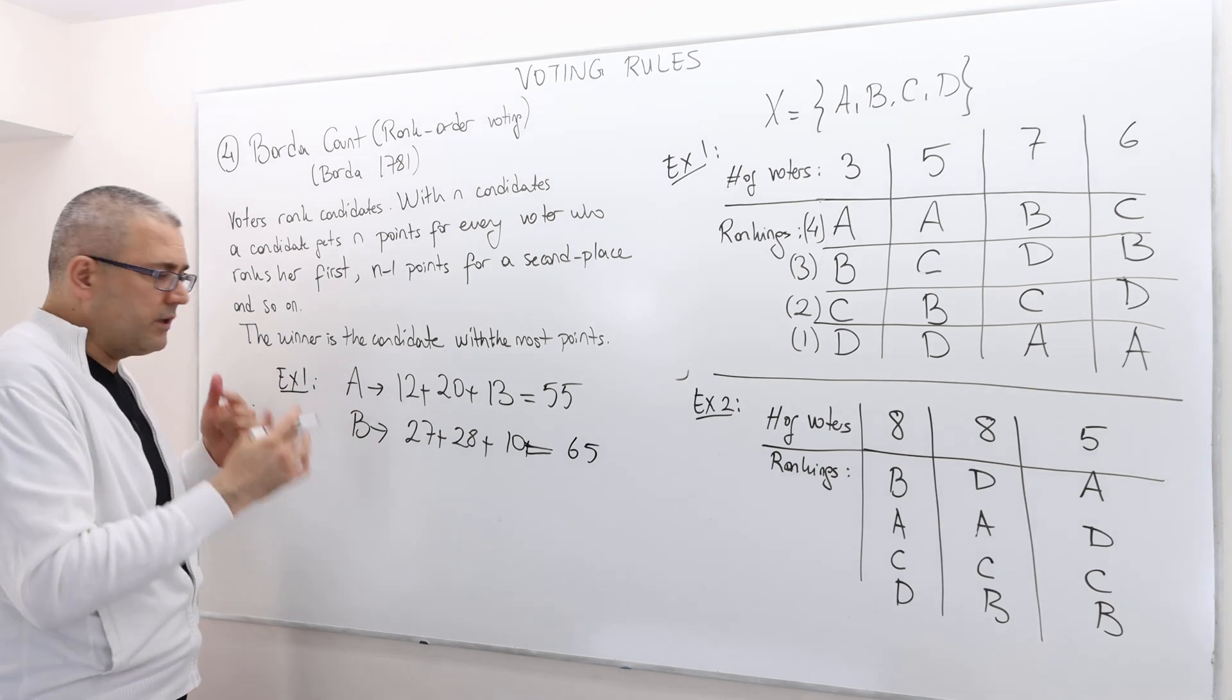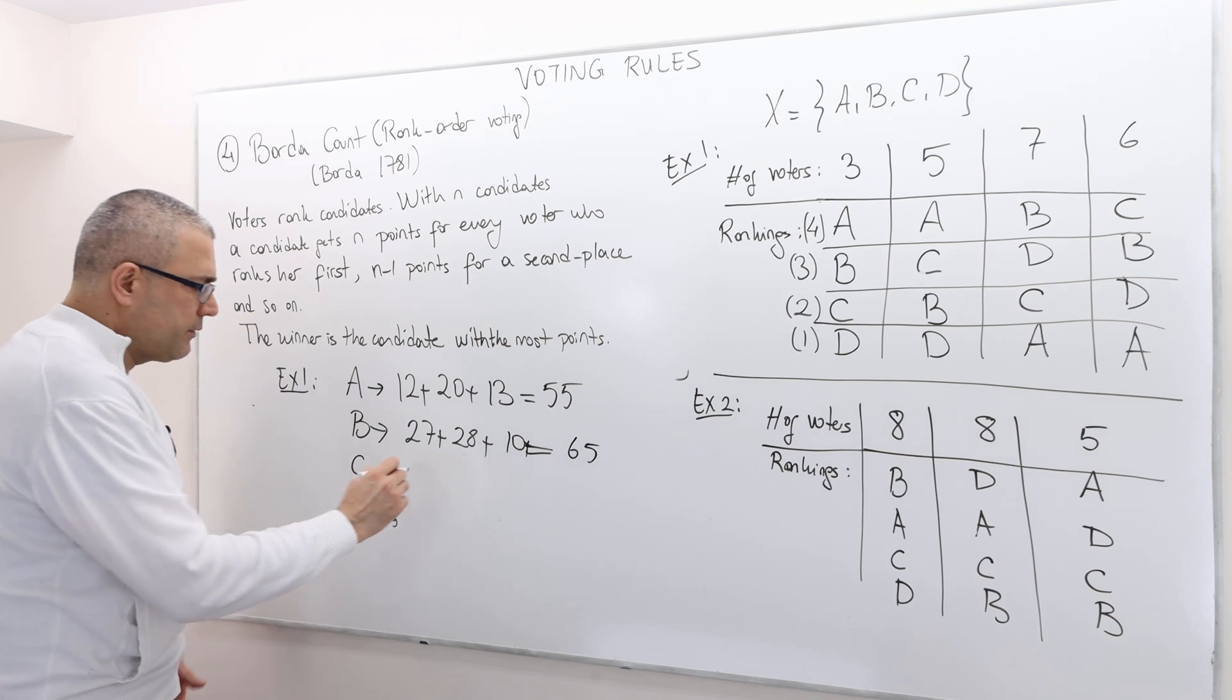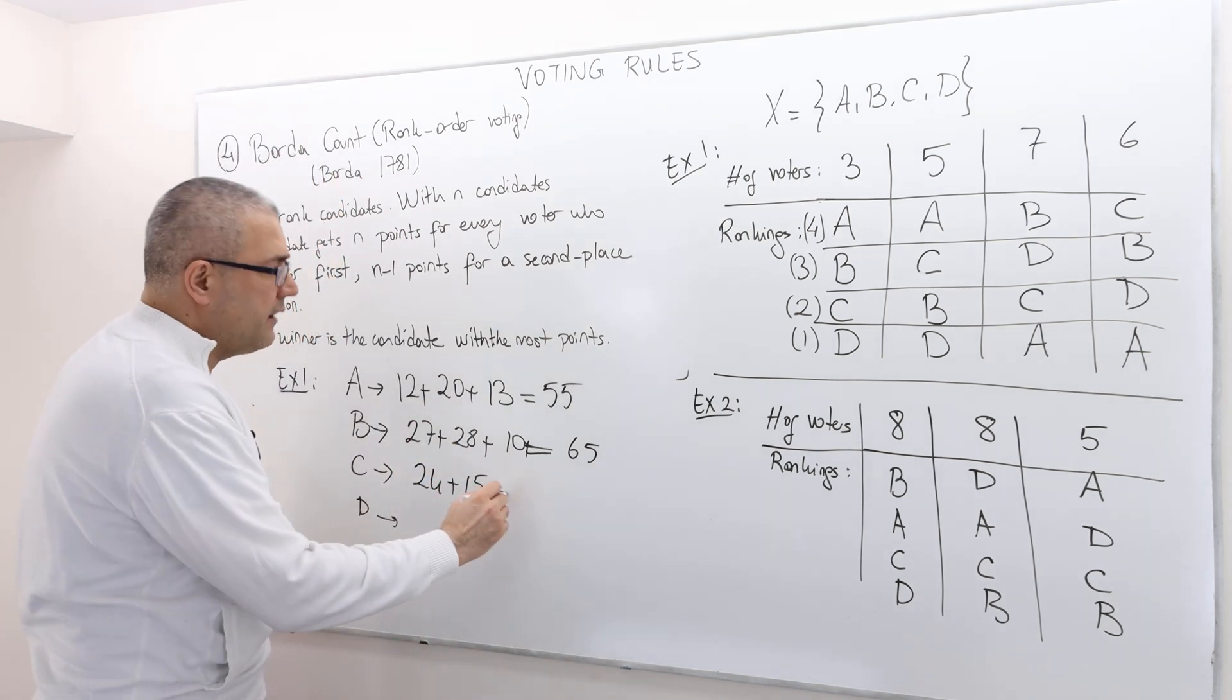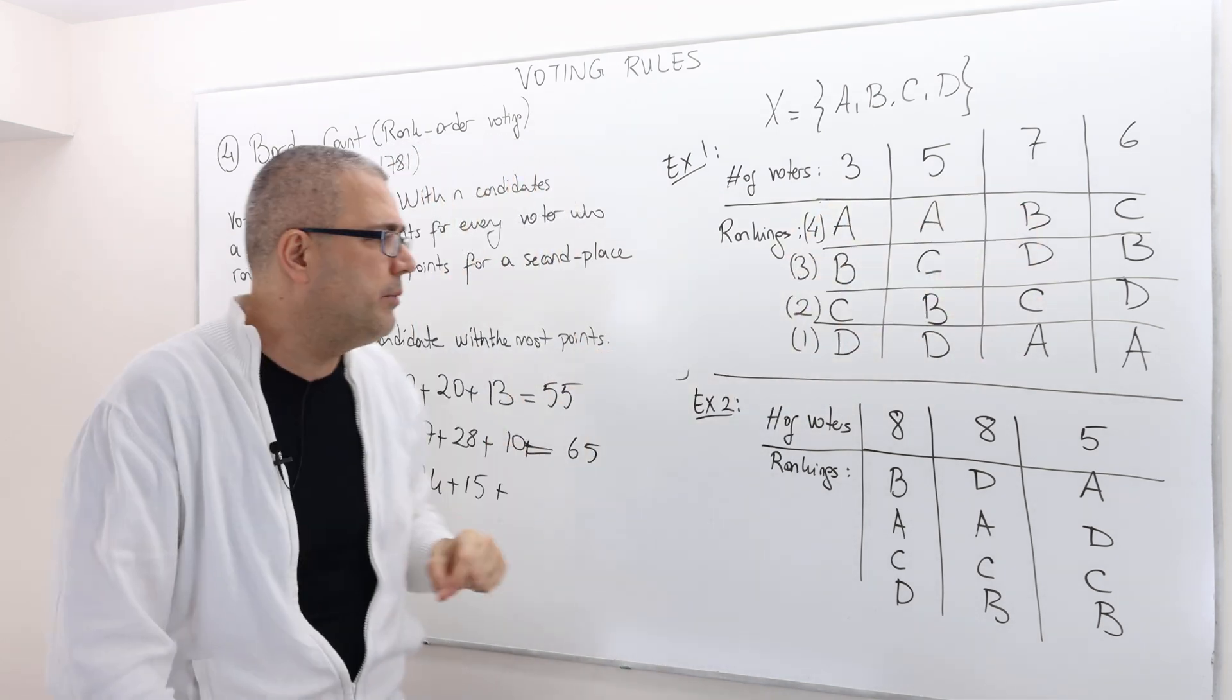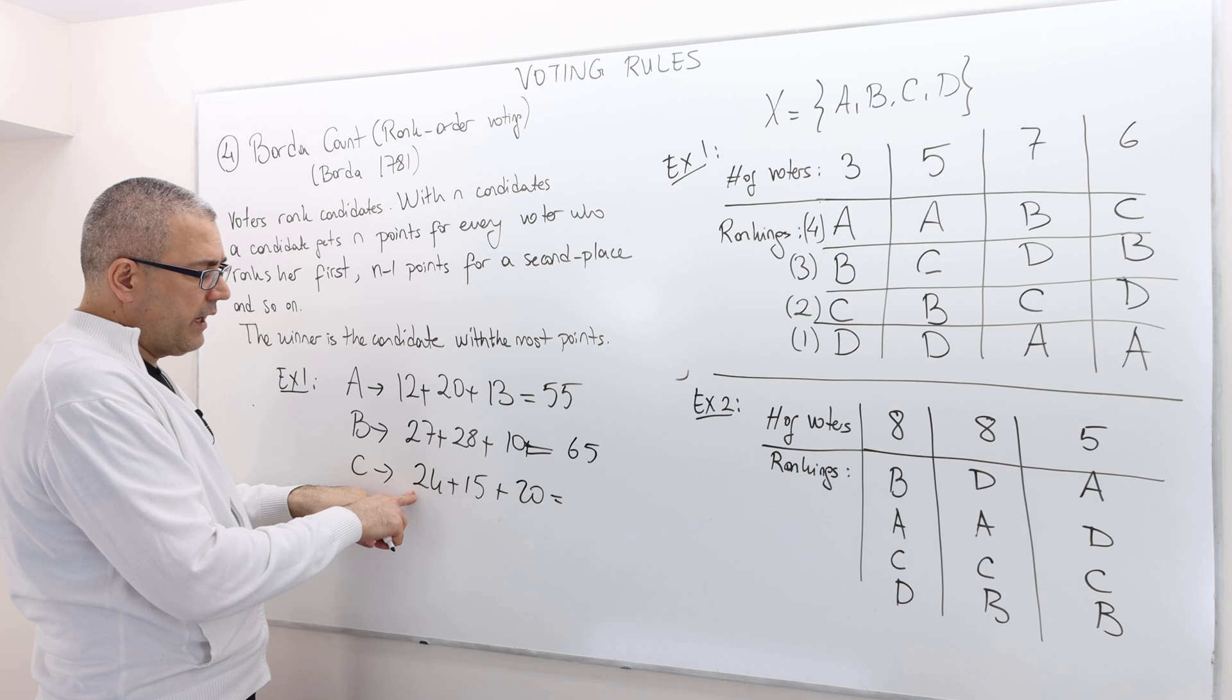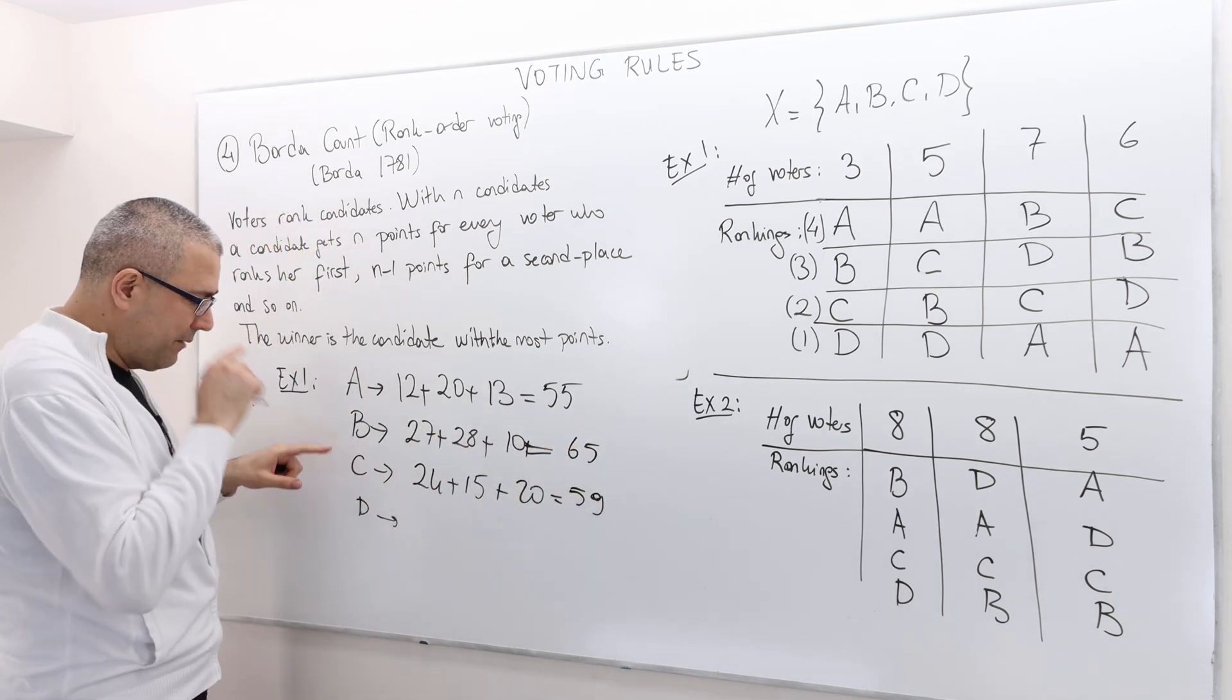What about C and D? Well, C is the first best only for six people, so six times four, 24 points. And then C is the second best for five people, so 15 points, three times five. And then C is the second best for three plus seven, 10 people, so two times 10, 20. So this is 24, 15, so I have 39 here, and then another 20, I have 59 here. Well, it doesn't beat B.